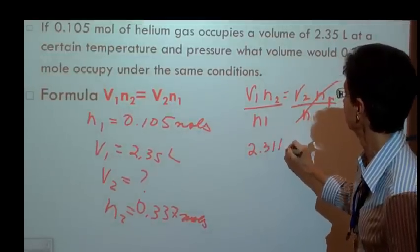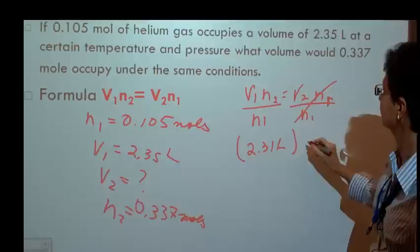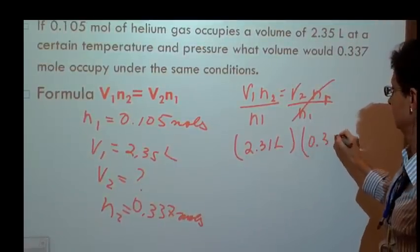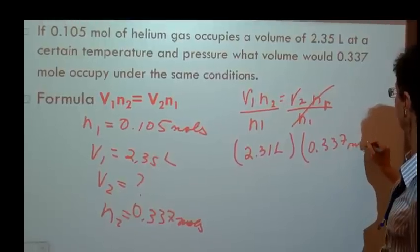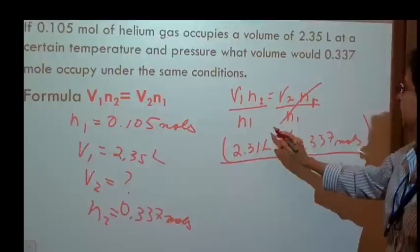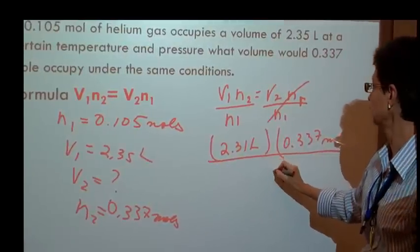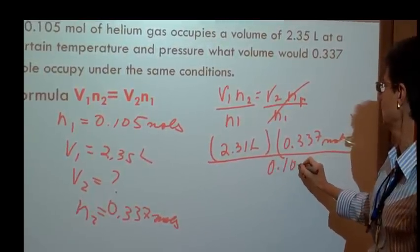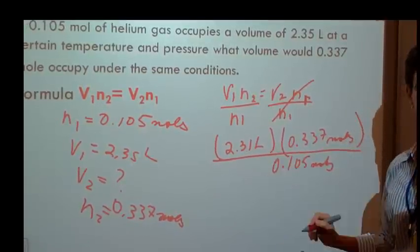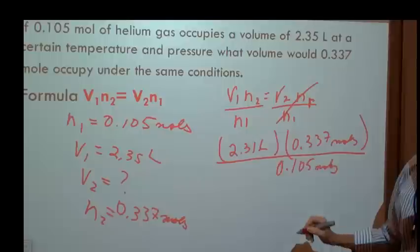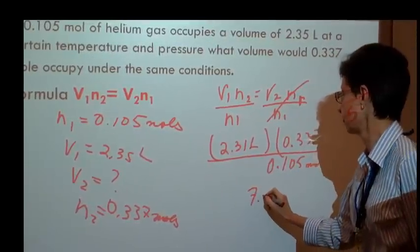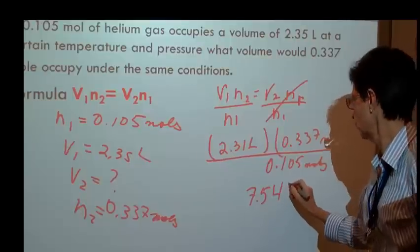2.35 liters, that's my V1. N2 is 0.337 moles, divided by my N1, which is equal to 0.105 moles. And I did this calculation previously, and I know that it is 7.554 liters.